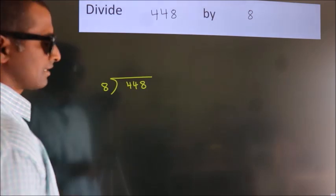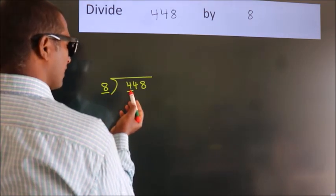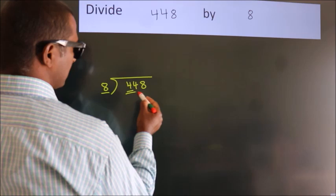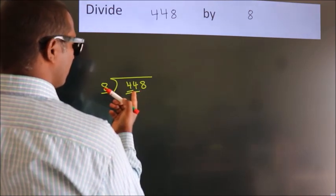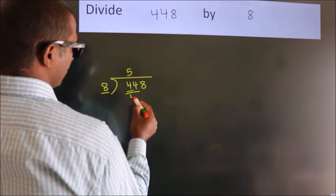Next, here we have 4, here 8. 4 is smaller than 8, so we should take two numbers, 44. A number close to 44 in 8 table is 8 fives 40.